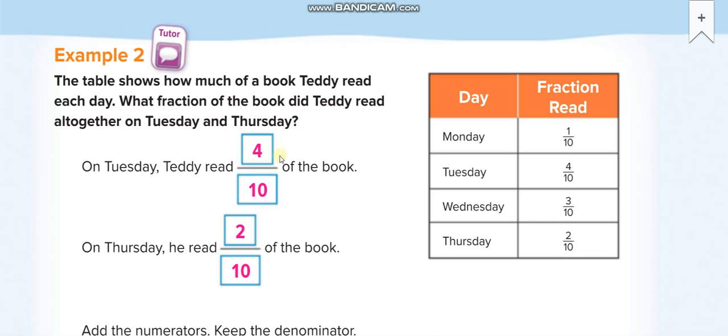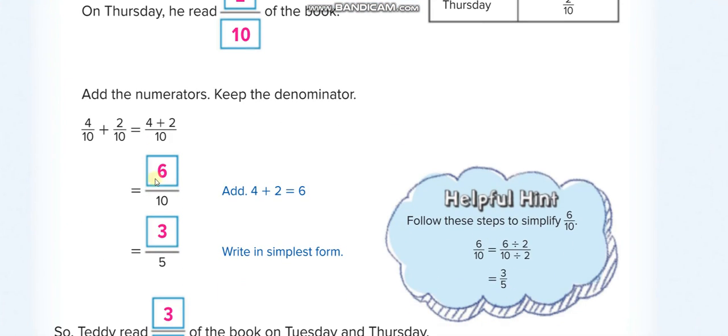Similarly here, 4 over 10 and 2 over 10, we will just add the numerators: 4 plus 2 over 10, 6 over 10. Then we can simplify it: divide by 2 up, divide by 2 down. 6 divide by 2 is 3, 10 divide by 2 is 5.